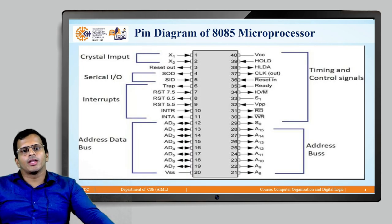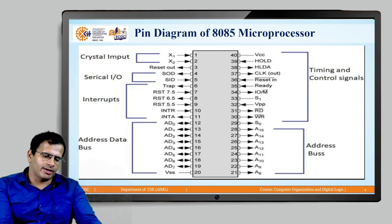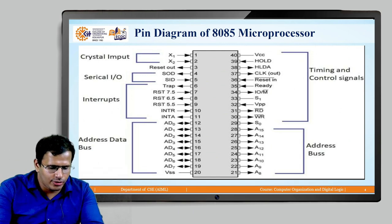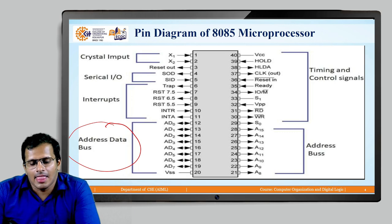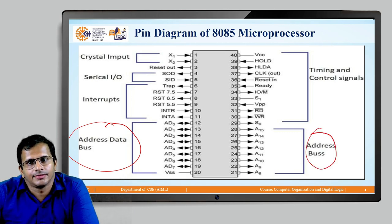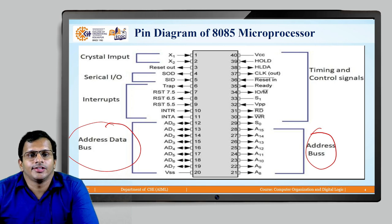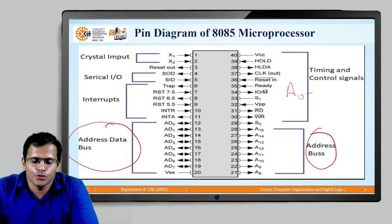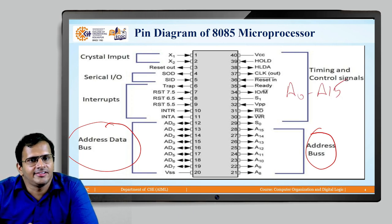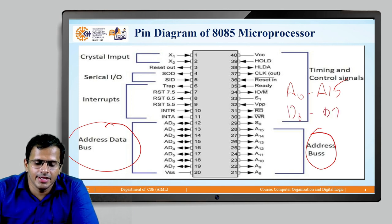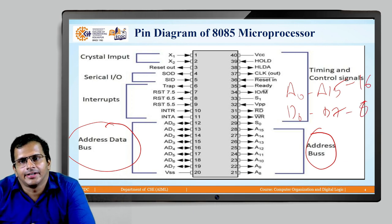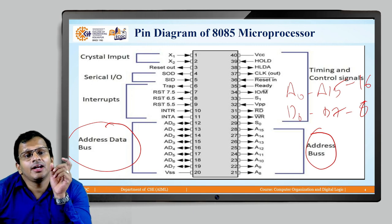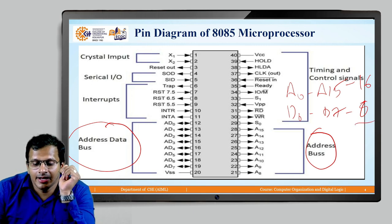The next part is the pin diagram of 8085. The address line is 16-bit and the data line is 8-bit, represented as A0 to A15 for address lines and D0 to D7 for data lines — a total of 16 address lines and 8 data lines. If we use these lines separately, the total number of lines becomes 24, meaning more pins are required.